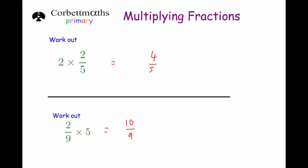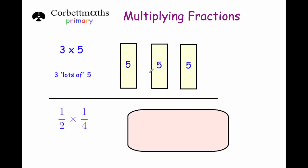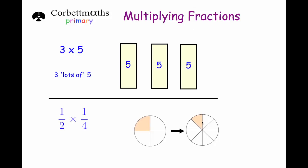Now let's look at how to multiply a fraction by a fraction. In the same way that 3 times 5 is 3 lots of 5, we can consider a half times a quarter as a half of a quarter — which is just 1 eighth. The shortcut: 1 times 1 is 1 and 2 times 4 is 8. So when multiplying fractions together, multiply the numerators together and the denominators together.